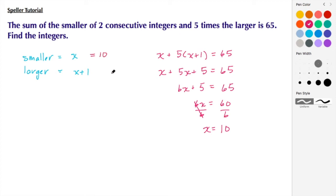So here we have the smaller integer being 10, and then to figure out what the large one is, we're going to substitute 10 plus 1 to give us 11. So we have the two consecutive integers: one being 10 and the other one being 11.